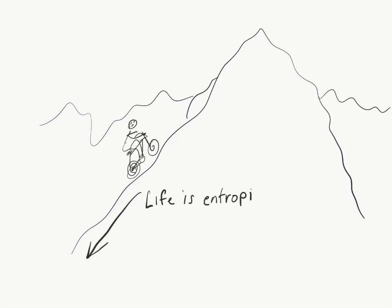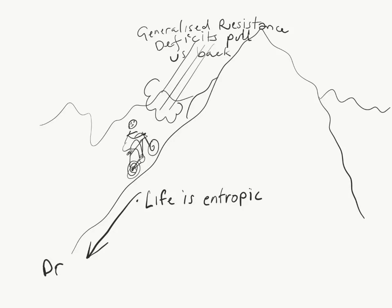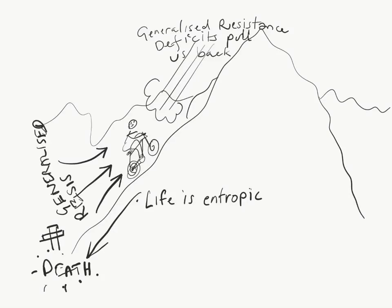Essentially, the model goes something like this. Life is entropic, the inevitability of death at one end places a burden on life. There are forces that force us backwards like a great headwind. These forces are called generalized resistance deficits, or GRDs. They are the pull of disease, despair, and even death.